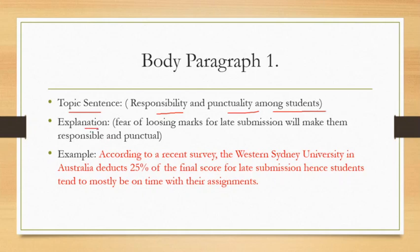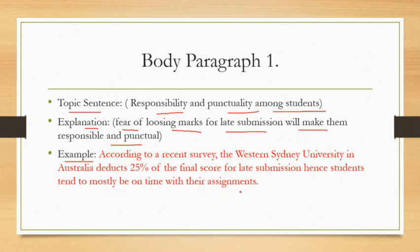For the topic sentence, here is the explanation: students will have a fear of losing marks for late submission, which will make them responsible and punctual. They will fear losing marks, so they will be responsible and punctual. For the example: according to recent surveys, Western Sydney University in Australia deducts 25% of the final score for late submission, hence students tend to mostly be on time with their assignments.